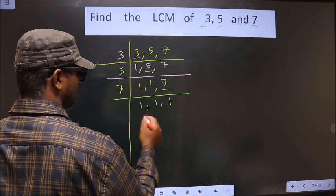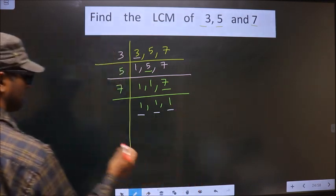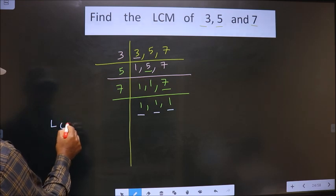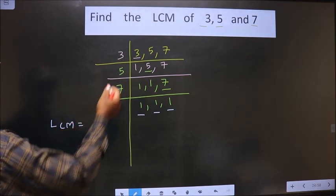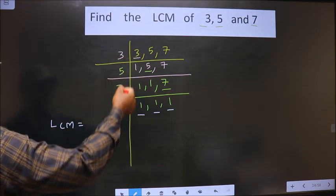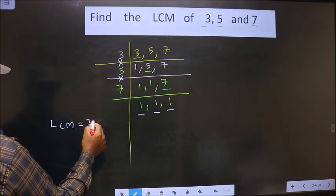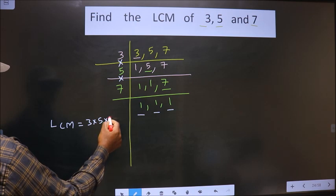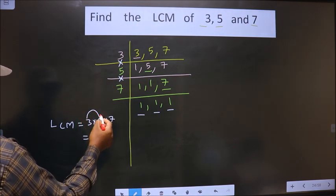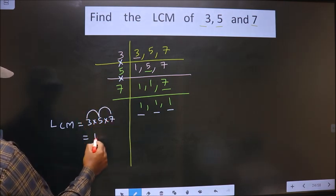So, now we got 1 in all the 3 places. So, now our LCM is the product of these numbers, that is 3 into 5 into 7. 3 into 5 is 15, 15 into 7 is 105.